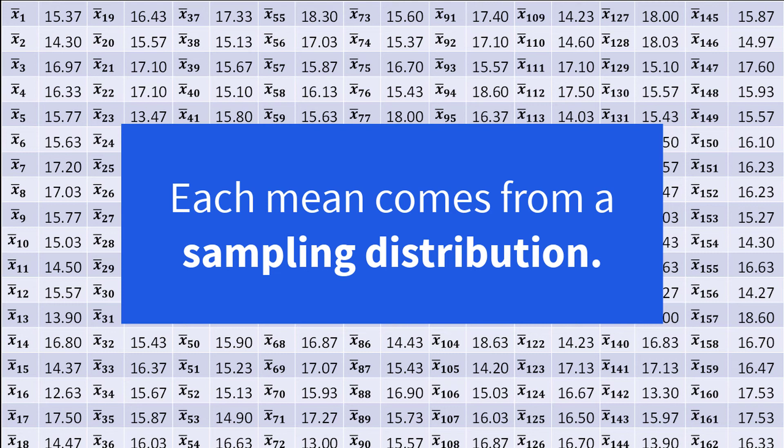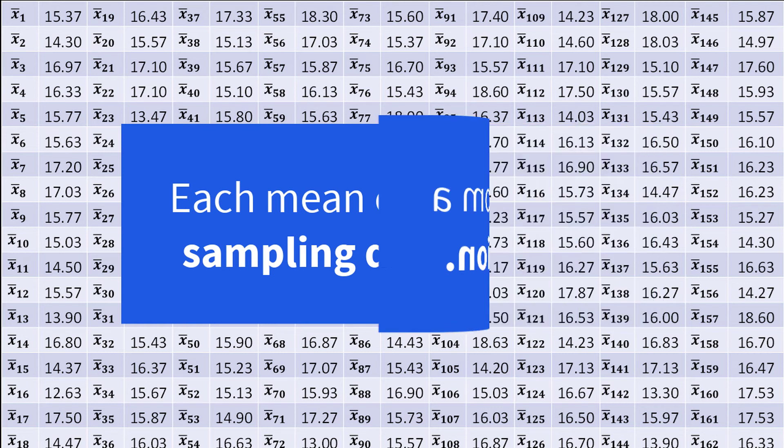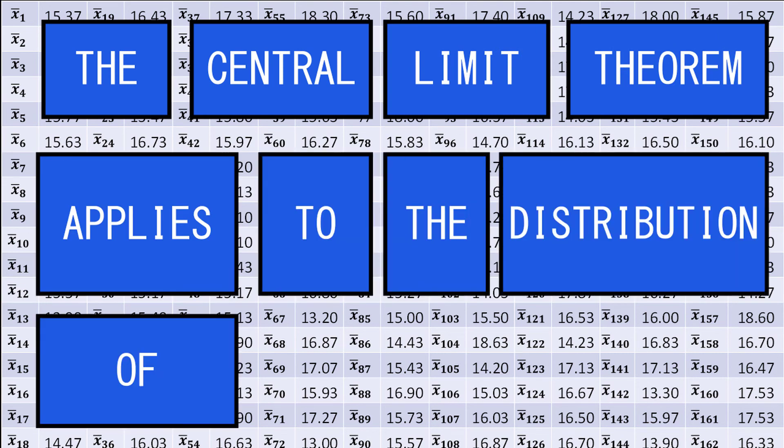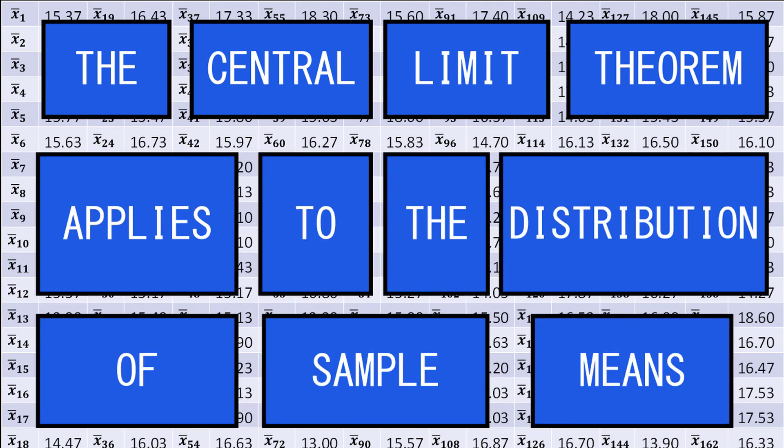Here is the first super important thing for you to understand about the central limit theorem, so make sure you're paying attention. The central limit theorem applies to the distribution of these numbers, the sample means, which make up the so-called sampling distribution.